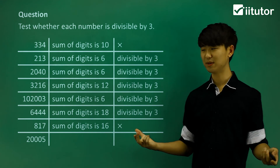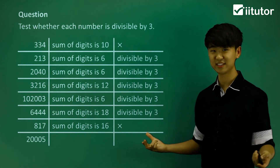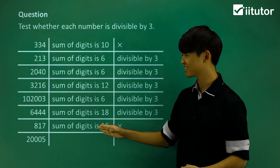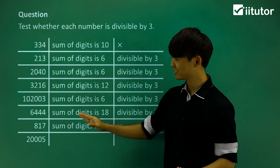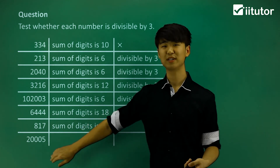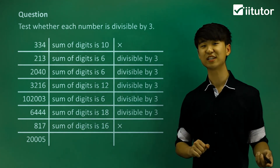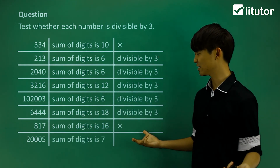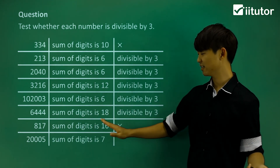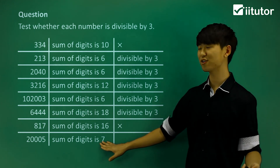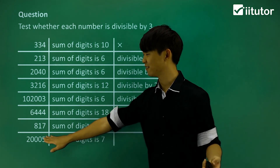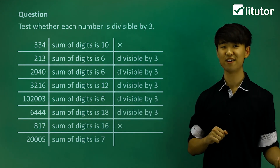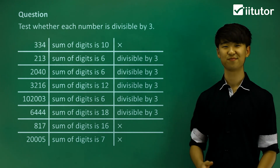Now this number, 20,005. Let's look at the sum of digits. So 2 plus all those zeros plus a 5 is going to give me 7 as my sum of digits. Now since 7 is not divisible by 3, then of course 20,005 is not divisible by 3.